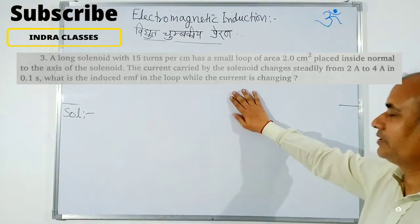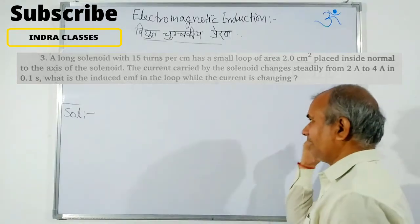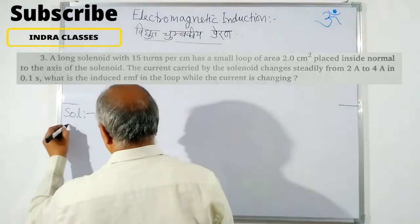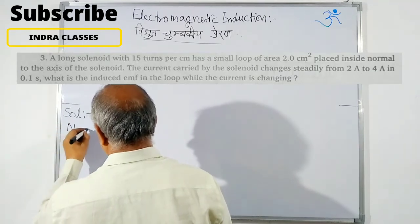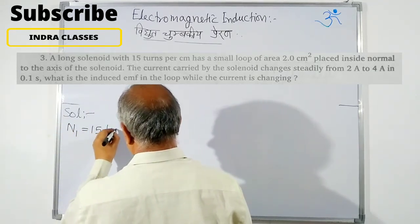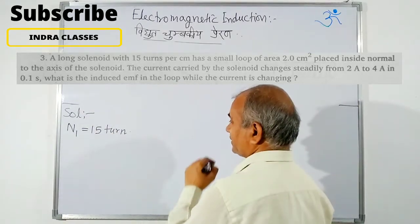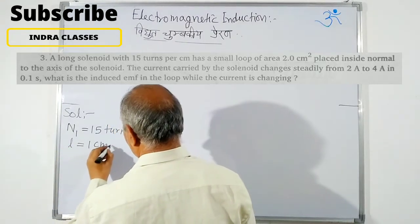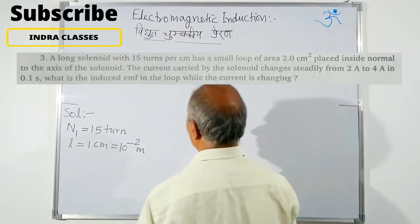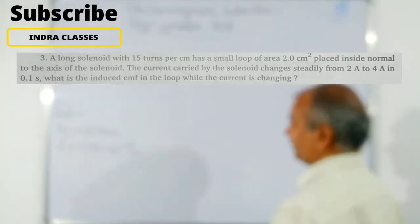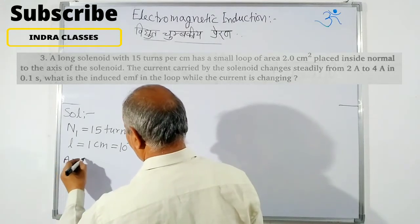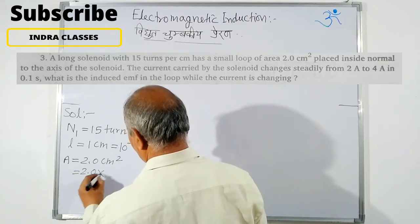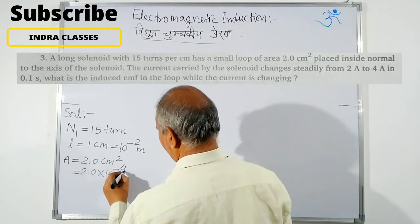The question is written in English and also available in Hindi. Given: number of turns in solenoid N1 = 15 turns, length l = 1 cm = 10⁻² m, area of solenoid A = 2.0 cm² = 2.0×10⁻⁴ m².